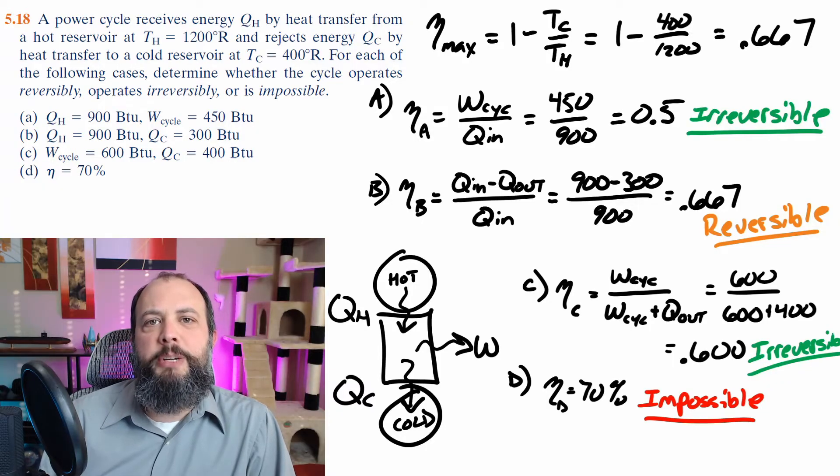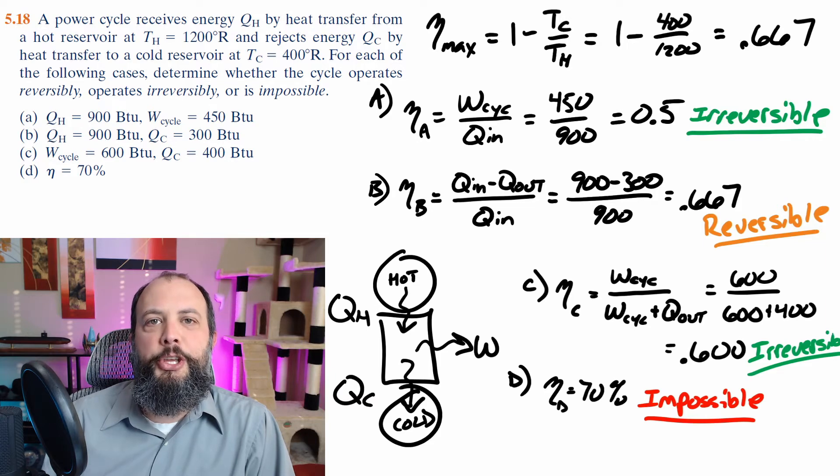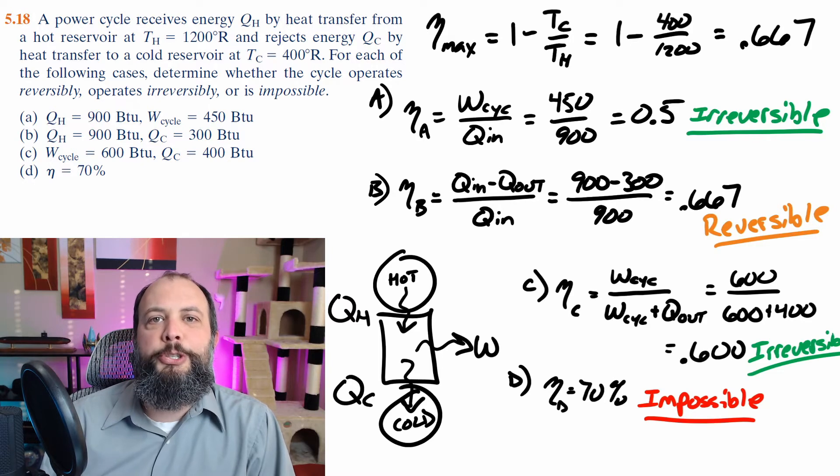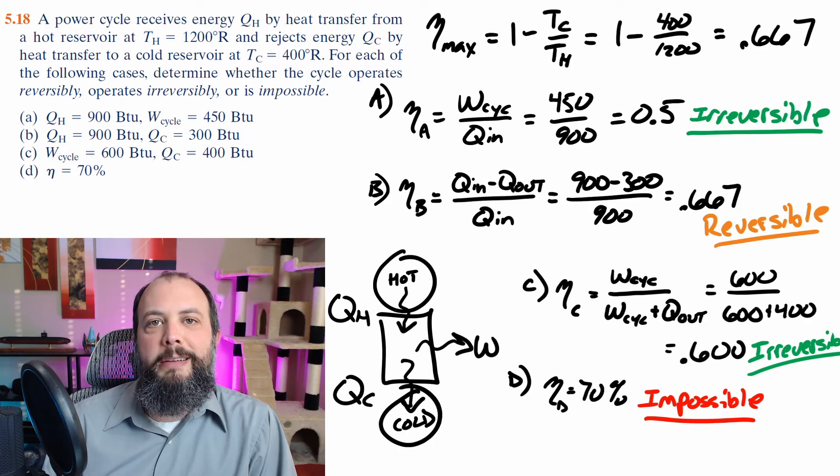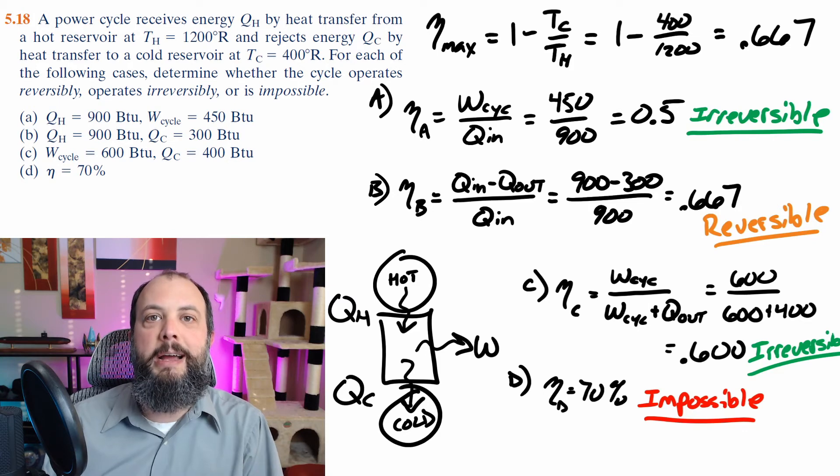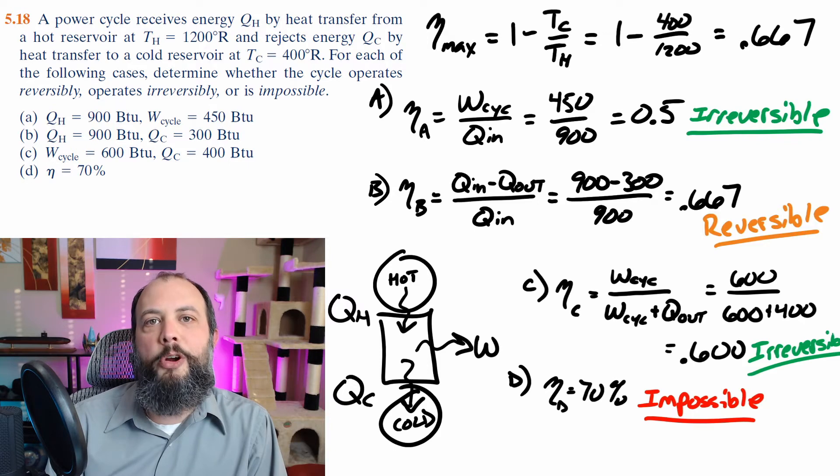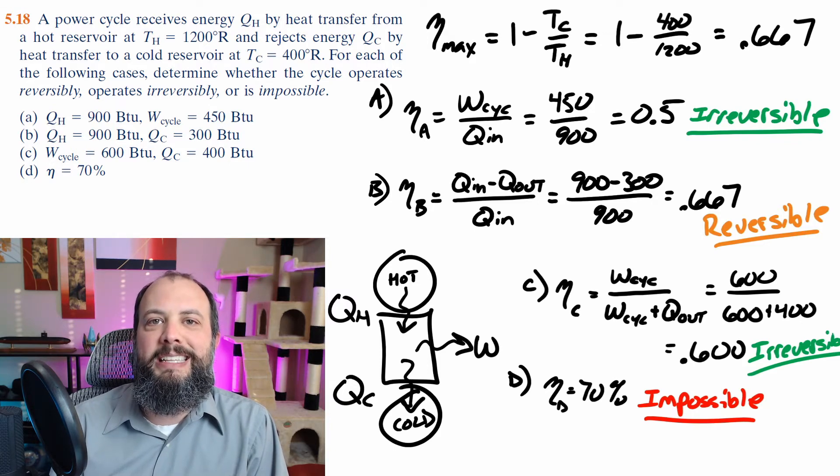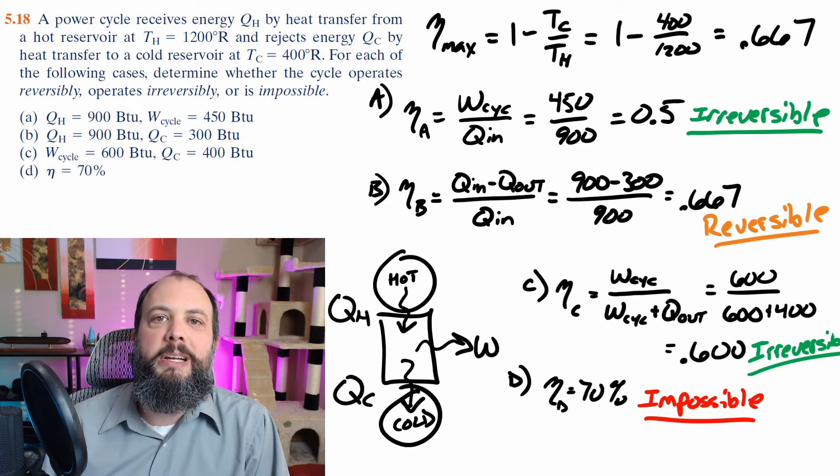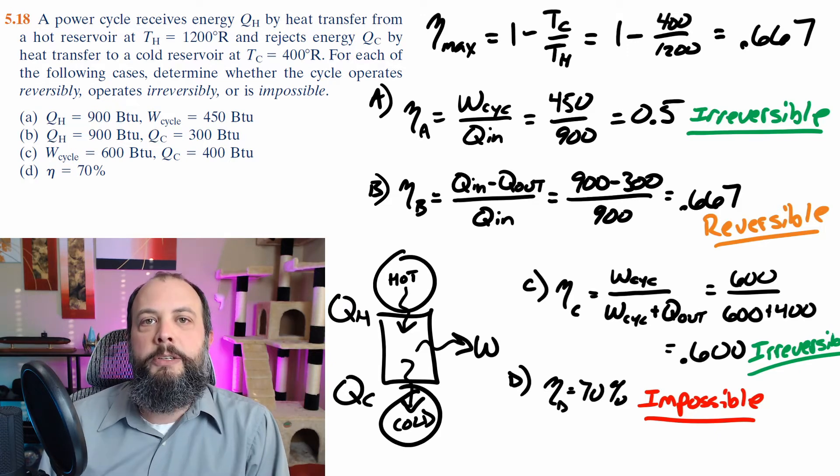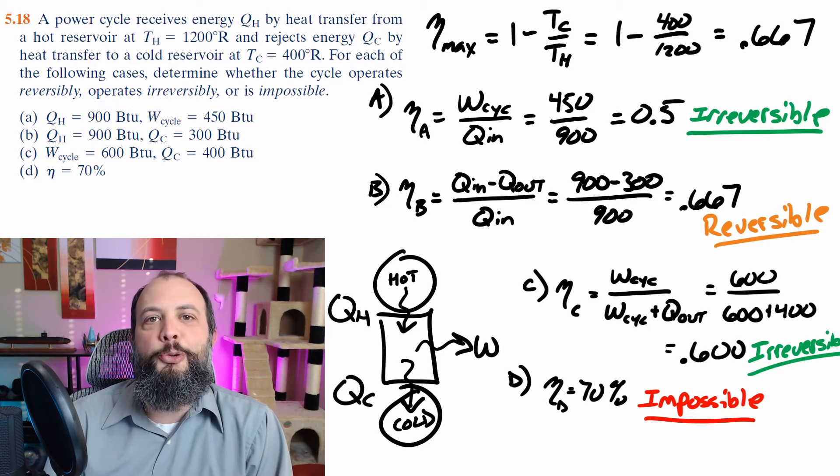So one quick note is I've been switching back and forth my terminology between Q_H is Q_in and Q_C and Q_out. And I do this because it helps me keep straight which direction the heat is flowing because a power cycle uses the same drawing as heat pump and refrigeration cycles. That is, it's a black box cycle operating between a hot and a cold source. But refrigeration and heat pump cycles have the Q and work terms all pointing in a different direction. So Q_C for a power cycle is the heat out. But for a refrigeration or a heat pump, that would actually be Q_in.